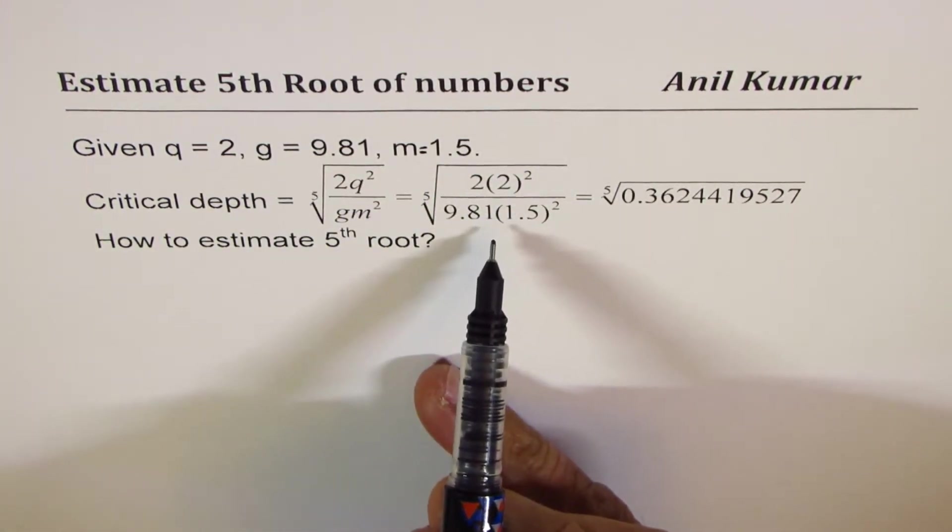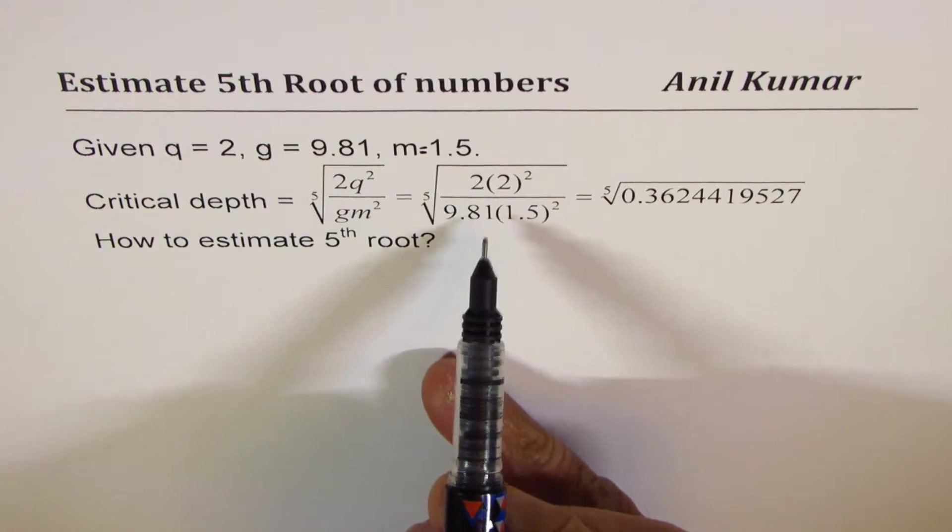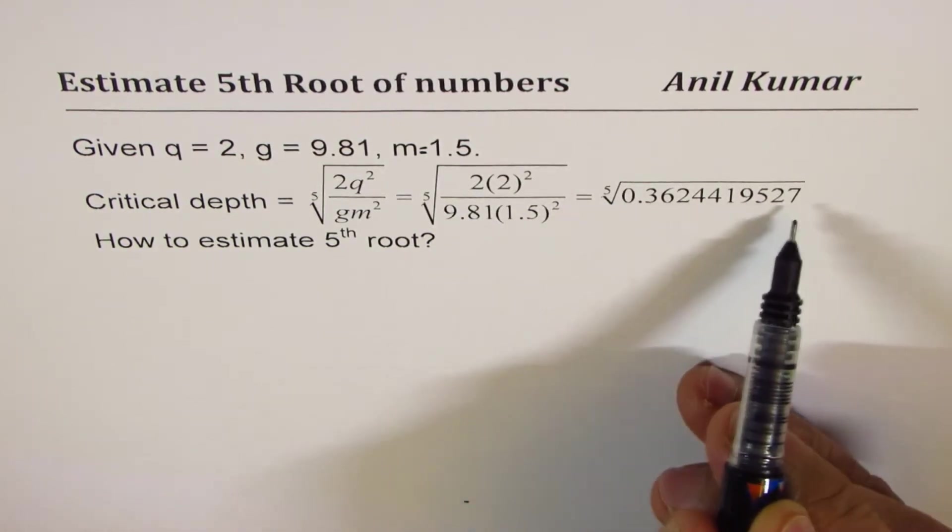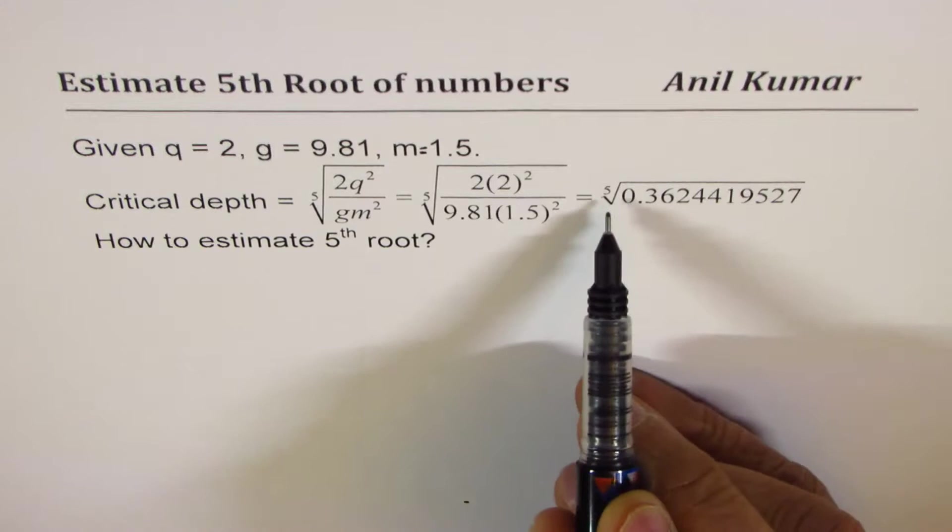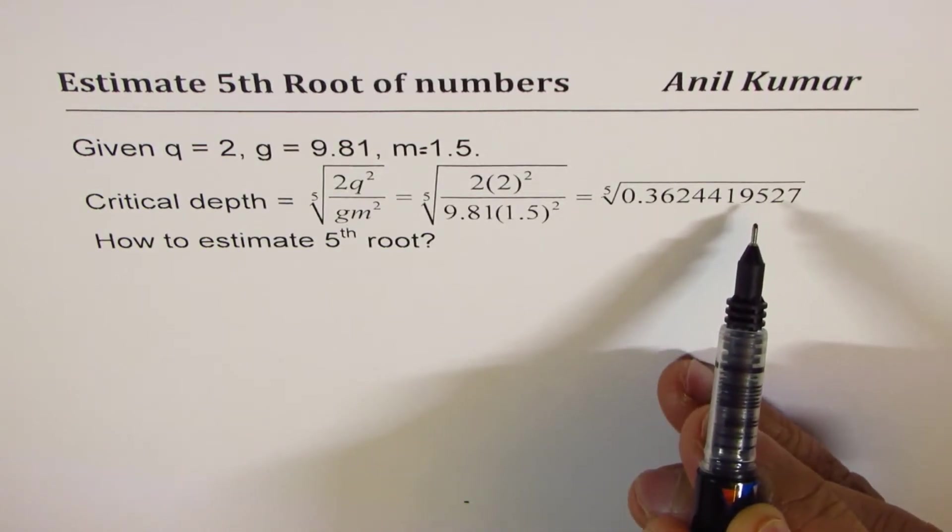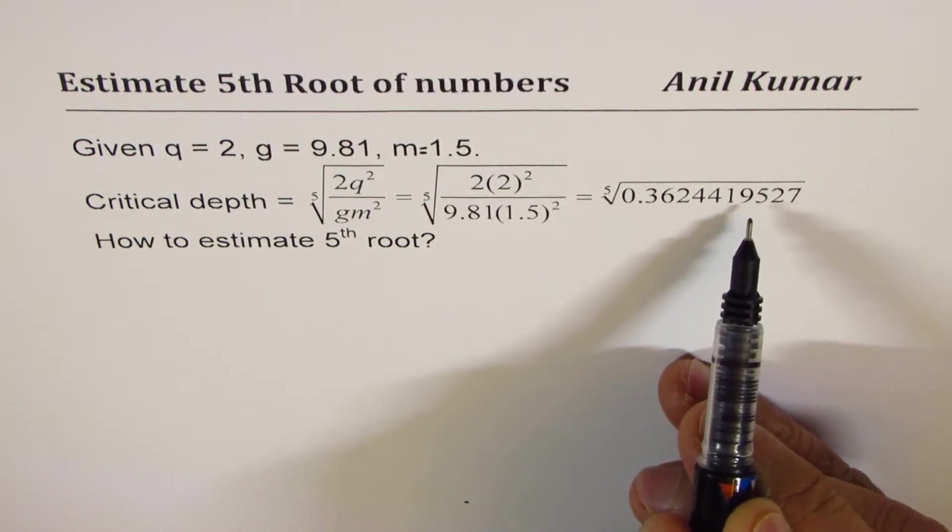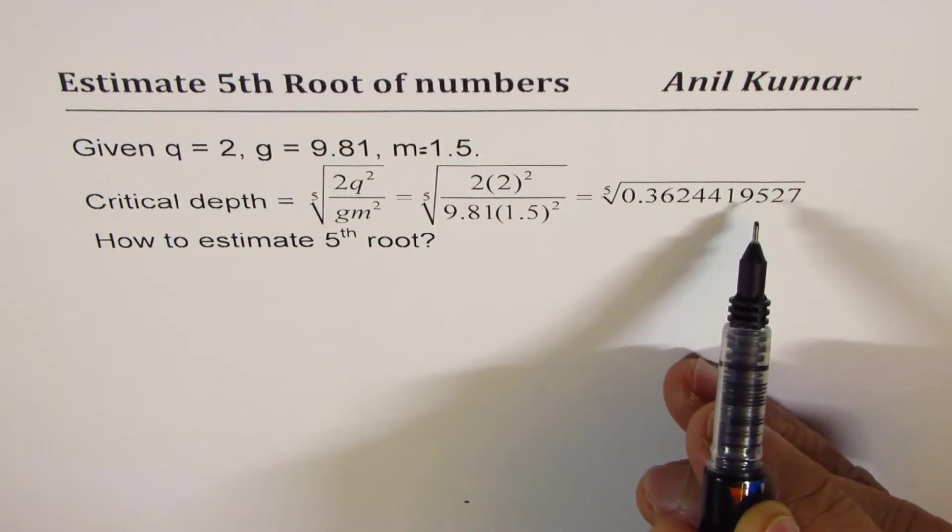Now if you use a calculator, then you get fifth root of that big decimal number. Fifth root is always an irrational number, and so we will always estimate it.